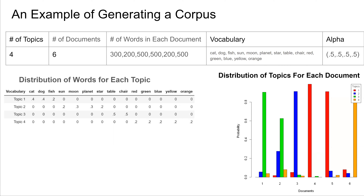Based on the distributions of words for each topic, we can say that Topic 1 is an animal-themed topic, Topic 2 is an astronomy-themed topic, Topic 3 is a furniture-themed topic, and Topic 4 is a color-themed topic. We sample the distribution of topics for each document, presenting the six resulting distributions in the bar chart on the bottom right. The four topics are represented by four different colors, and the six documents are labeled on the x-axis. Now that we have determined the necessary ingredients, we can populate the corpus with words.